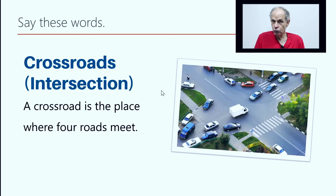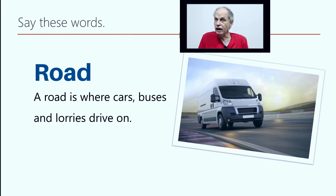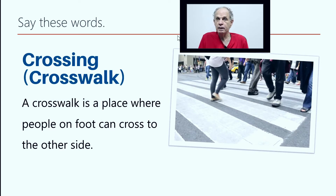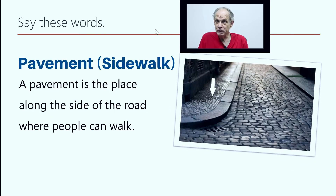Crossroads, or intersection — a crossroads is the place where four roads meet. A road is where cars, buses, and lorries drive on. Crossing, or crosswalk — a crosswalk is a place where people on foot can cross to the other side. A signpost, or street sign, shows us where different places are. A pavement, or sidewalk, is the place around the side of the road where people can walk.